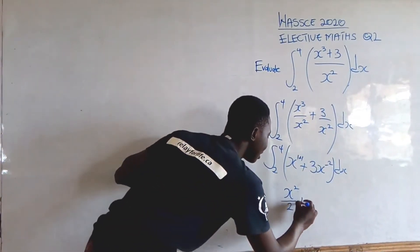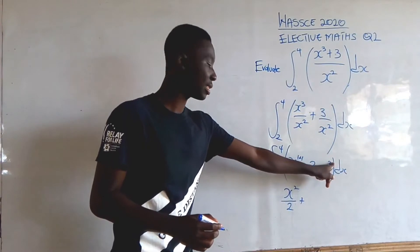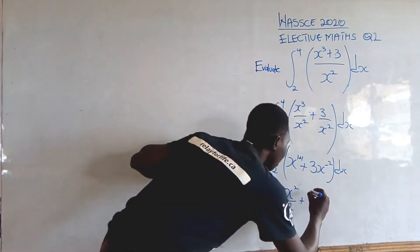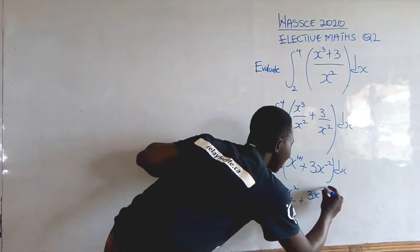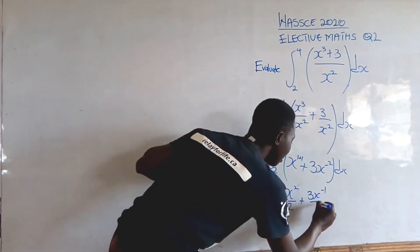Plus, we are going to add 1 to this exponent, which we are going to get minus 1. So, 3x^(-1), then we divide it by the new exponent, which is minus 1.